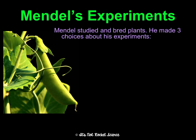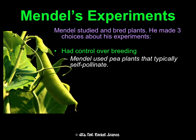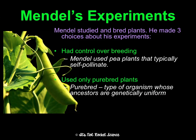He studied and bred pea plants and made three choices about his experiments. First, he used pea plants because he could control their breeding — they self-pollinate, so he didn't have to worry about new variations from breeding with different organisms. Second, he used only purebred plants. Purebred means an organism whose ancestors are genetically uniform — like a purebred black lab whose every ancestor is also a black lab.